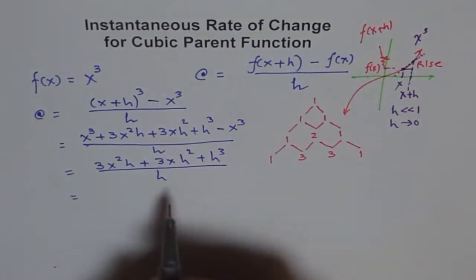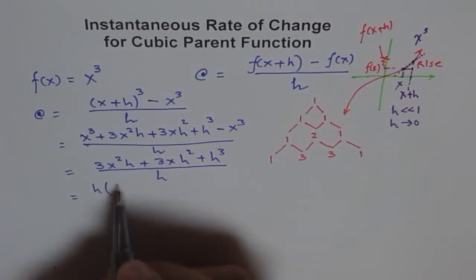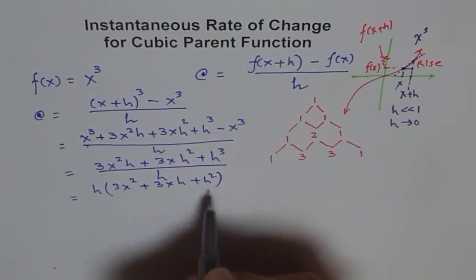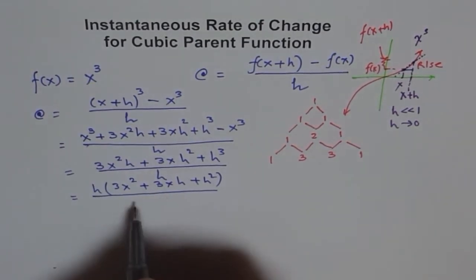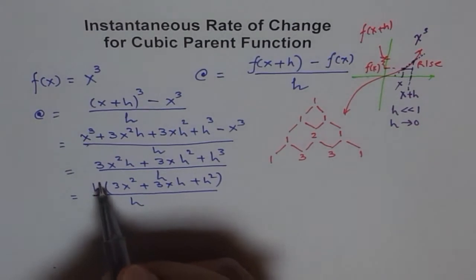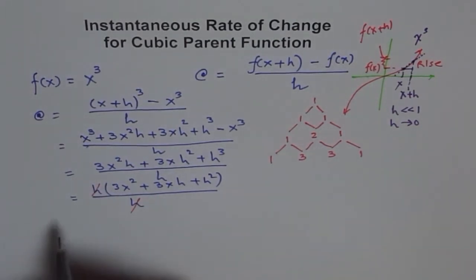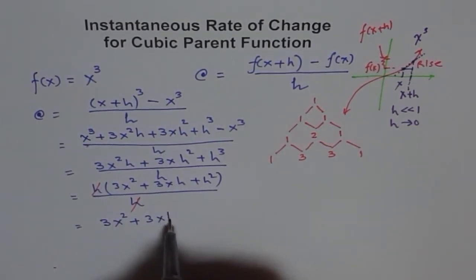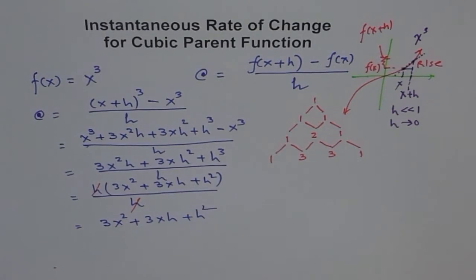I can take h common and I'm left with h(3x² + 3xh + h²) over h. Now we can cancel out the h term and we are left with 3x² + 3xh + h².